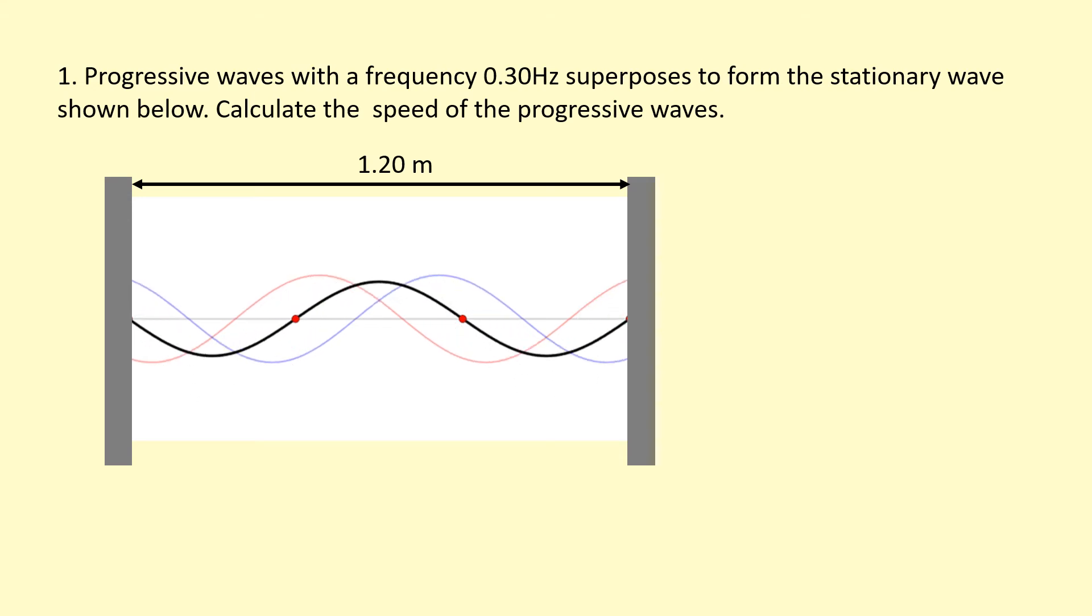In this question, I've got a progressive wave with a frequency of 0.30 hertz, superposing to form a stationary wave shown below. Calculate the speed of the progressive waves. You've got the distance between the two fixed points on either end there, 1.20 meters. You can use this to figure out the wavelength, but you have to be careful.